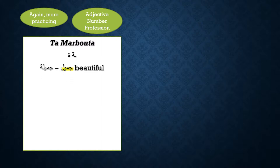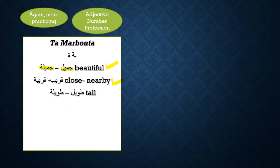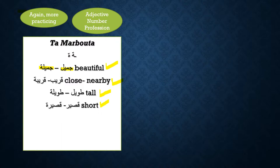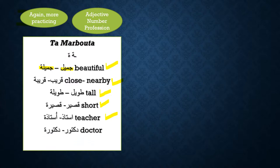For example, the word 'jamil' — jamil is an adjective, so you can make it one time masculine and one time feminine. The word 'qareeb' — qareeb is an adjective, you can make it one time masculine and one time feminine. That is rule number one. For rule number three, 'ustad' is a profession — I can say 'ustada,' so we can add or remove ta marbuta. 'Doctor' — rule number three, profession — 'doctora.' We can make it one time masculine, one time feminine.